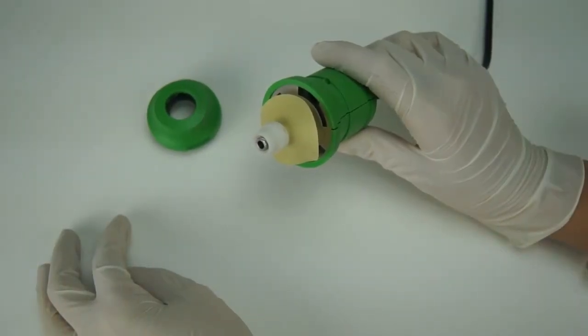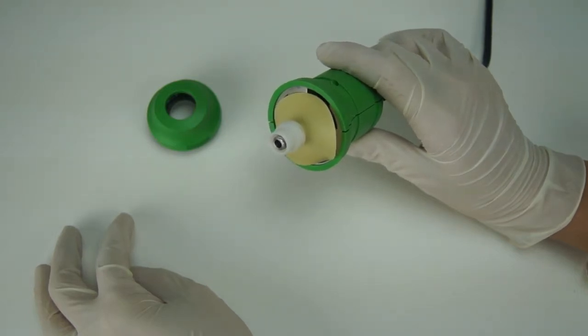The next step is to retract the lead screw until the lead screw protector is securely seated against the gun.